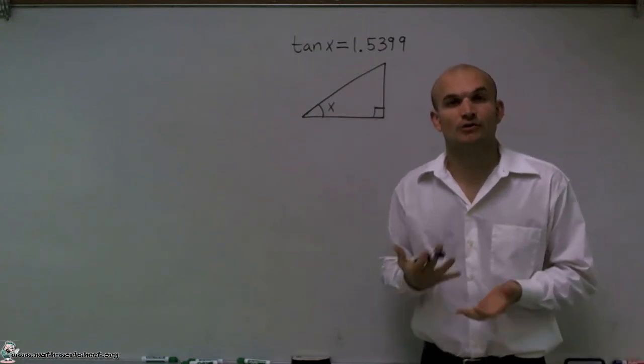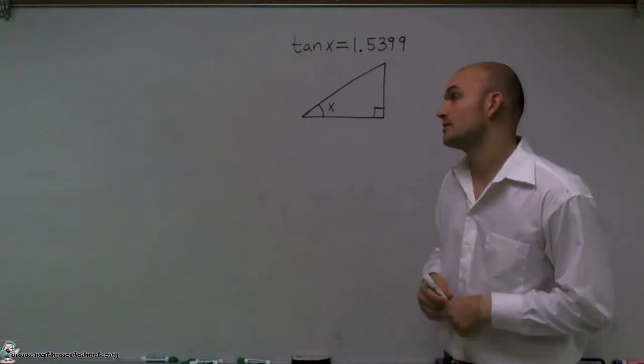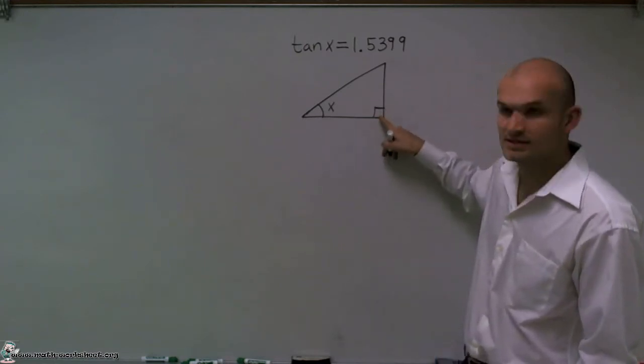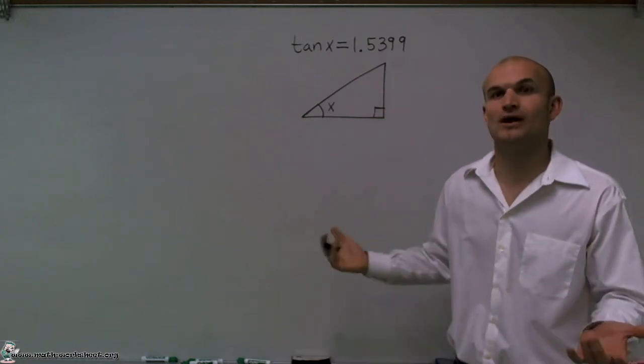Before we can get started, we want to make sure that we can use the tangent function. So to do that, we have to make sure we have a right triangle. And what I do is I notice, since I have this little box triangle, that means I have a right angle in my triangle. Therefore, I have a right triangle.